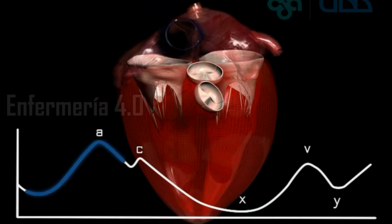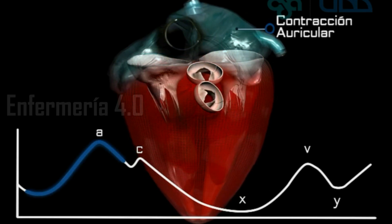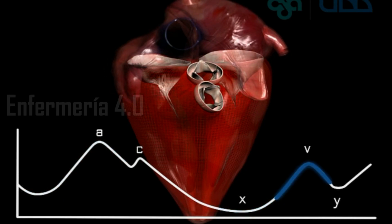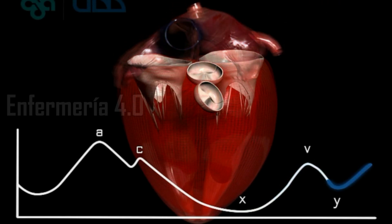La onda A se ve justo antes de escuchar el primer tono cardíaco y traduce contracción auricular. El descenso X sigue a la onda A. Luego se aprecia la onda V, que se ve justo antes de escuchar el segundo tono y ésta traduce el llenado auricular. Le sigue el descenso Y.